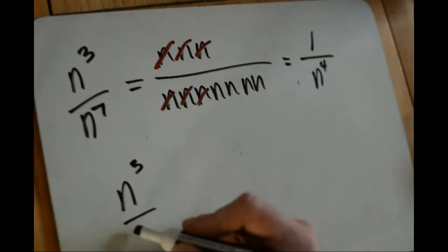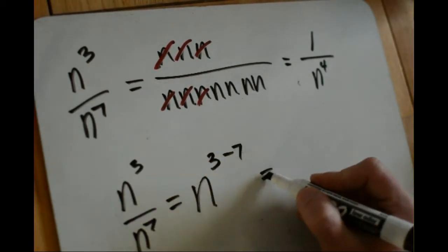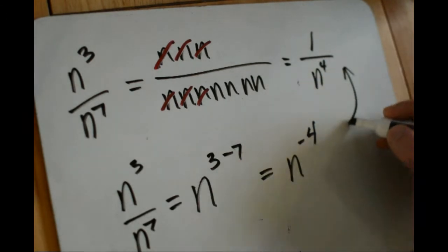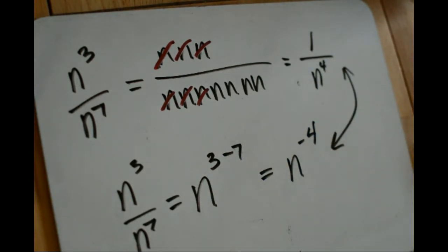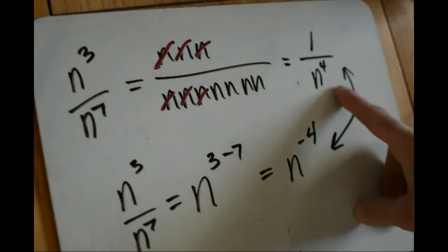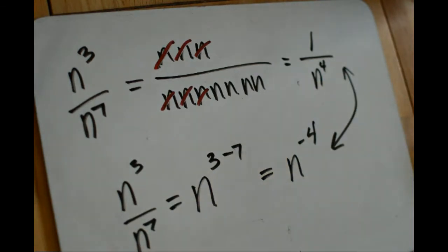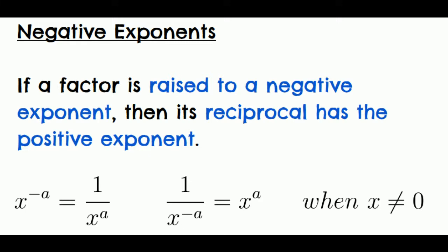Using the shortcut, n to the third over n to the seventh is n to the three minus seven, which is n to the negative four. Simplifying one way gave us one over n to the fourth, and simplifying another way gave us n to the negative four — illustrating that these two expressions are exactly the same thing. That's what a negative exponent is: a negative exponent really means reciprocal. Anytime you have something to a negative power, that's really just one over that to the positive power. So our rule is: x to the negative a equals one over x to the positive a, and one over x to the negative a equals x to the positive a. This also requires x to not be zero.